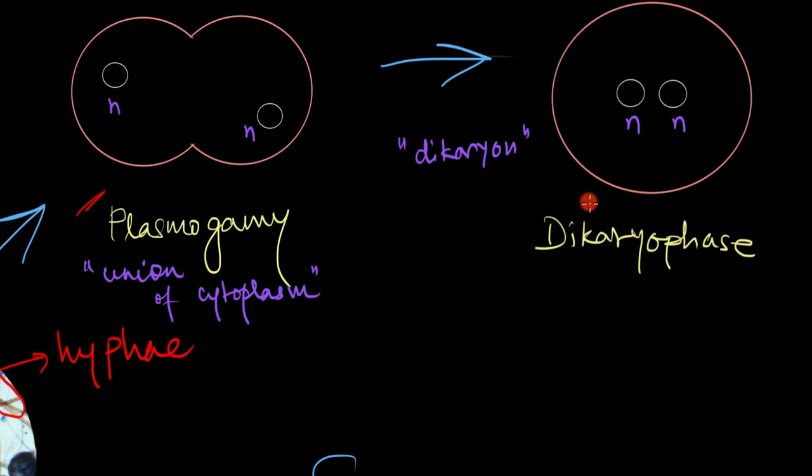We denote this cell as N plus N. This intermediate phase, where we see this N plus N condition or this dikaryon condition, this phase or this stage is called the dikaryotic phase. And it's an intermediate between the plasmogamy stage and the karyogamy stage.